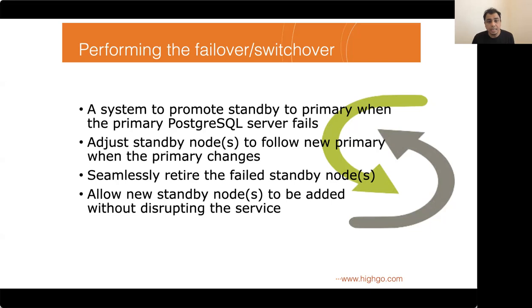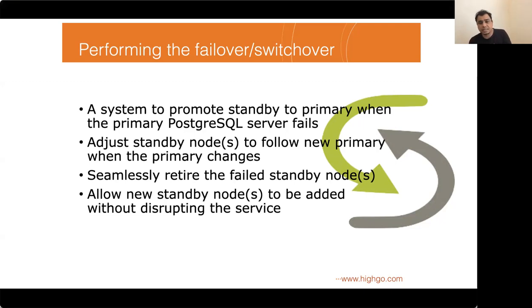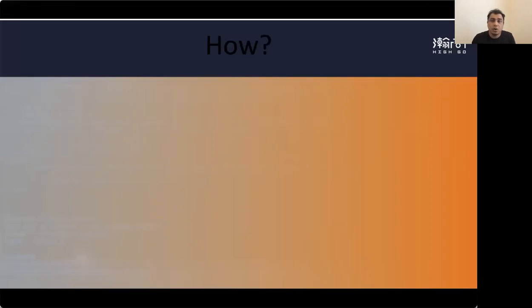After we have a redundant database system and an effective failure detection system, all that stands between us and a highly available PostgreSQL database system is a component that can act on alarms from the health checker and switch over to a healthy component. For our PostgreSQL HA system, the most critical scenario is when the primary database server fails, so we need a failover management system to: promote a standby to primary when the primary fails, adjust standby nodes to follow the new primary, and allow new standby nodes to be added without disrupting the system.